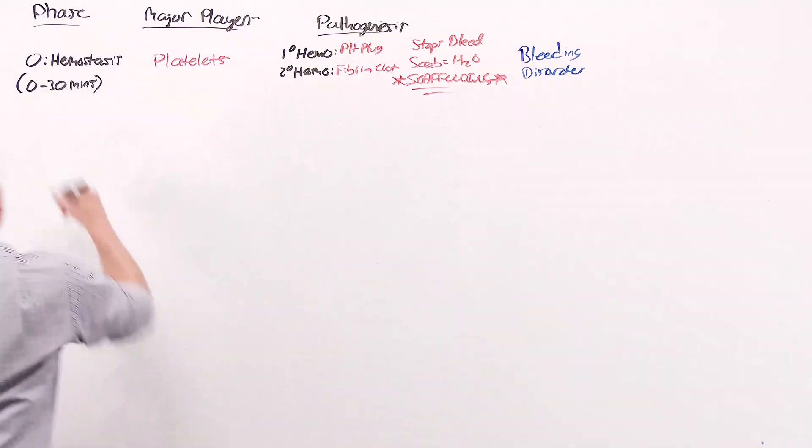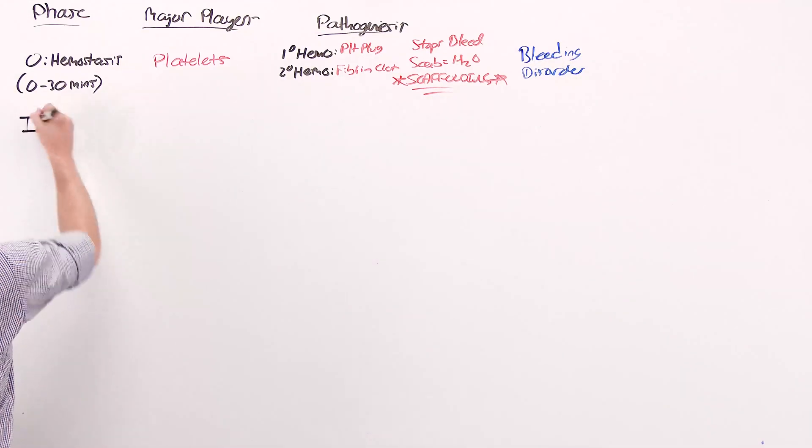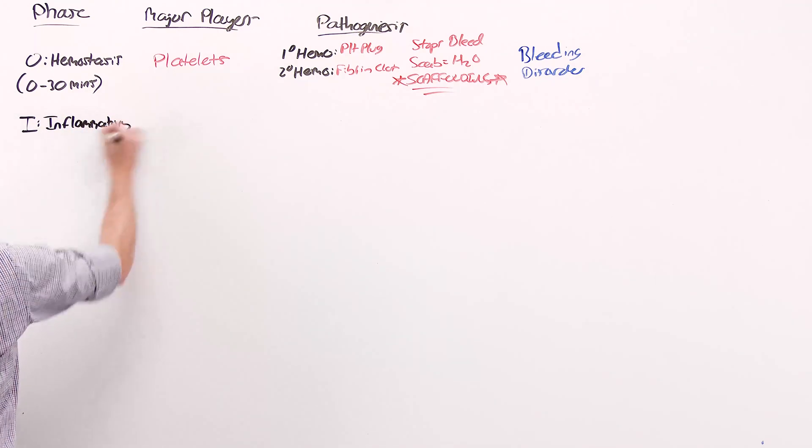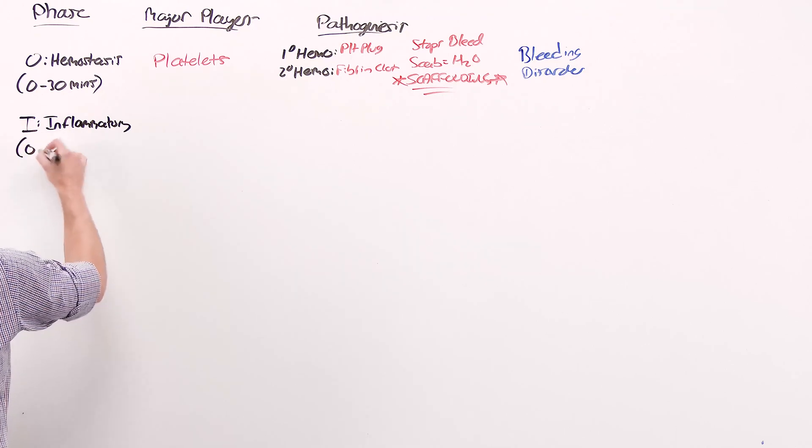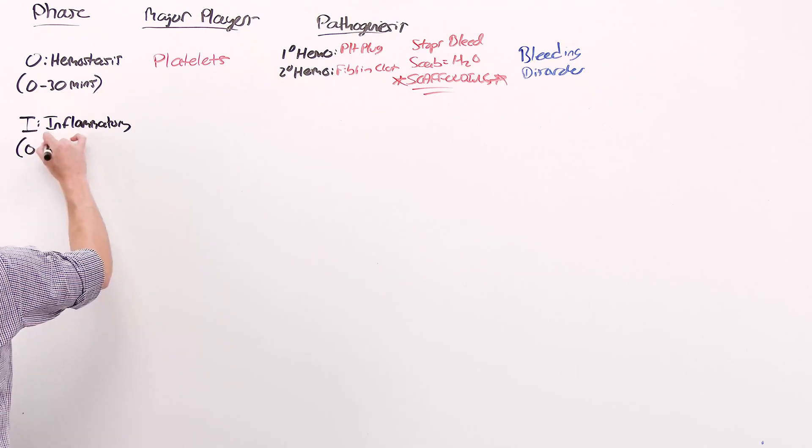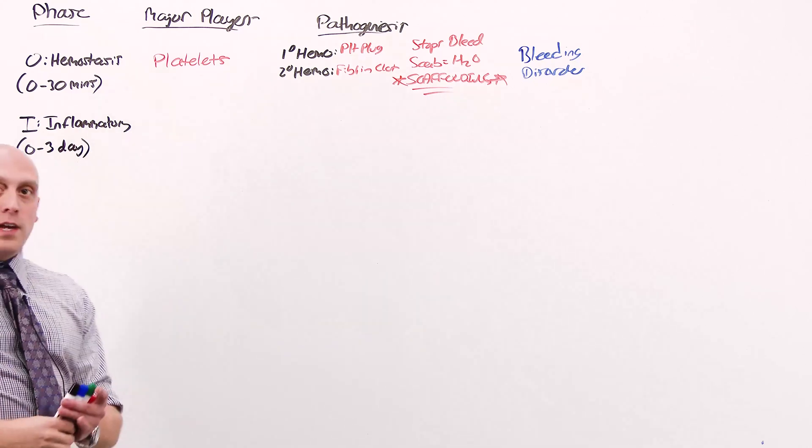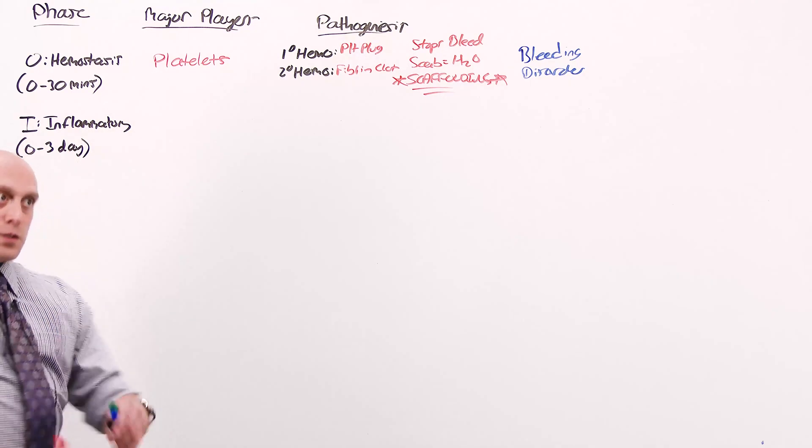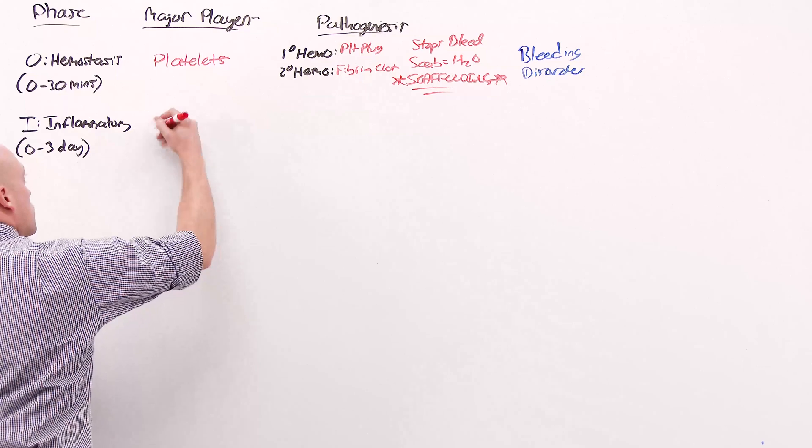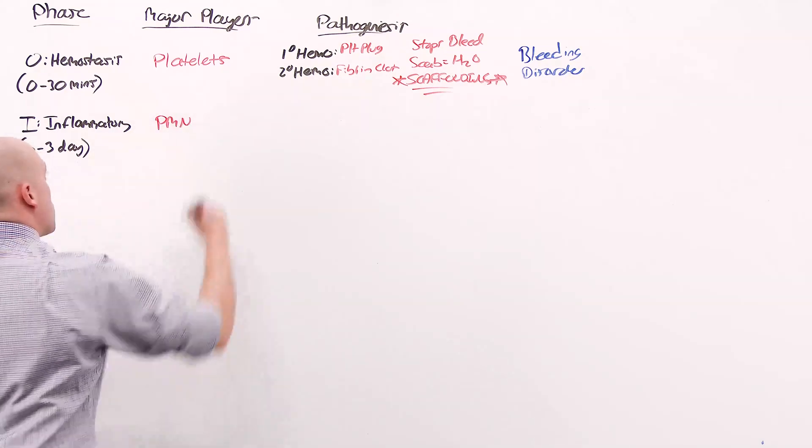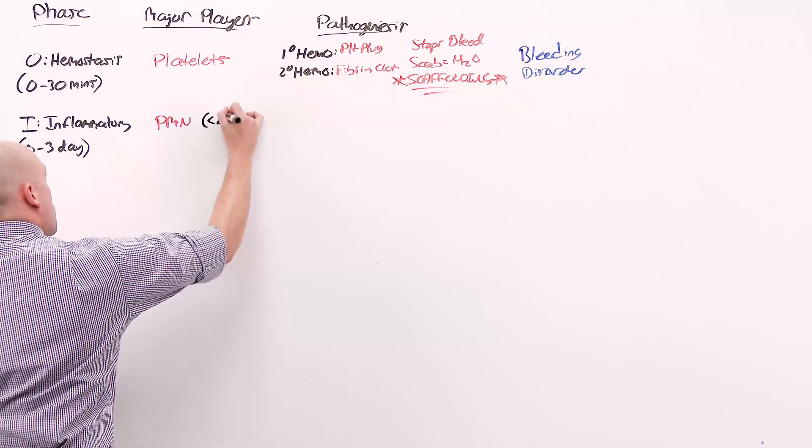Phase one is the inflammatory phase. This occurs from as soon as the wound is created to about day three. The inflammatory phase actually is in two sub-phases. The first inflammatory cells to arrive are neutrophils. And neutrophils predominate the wound in the first day.